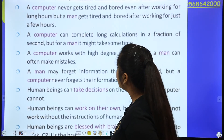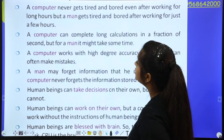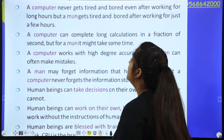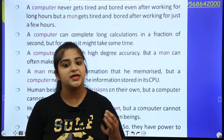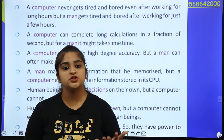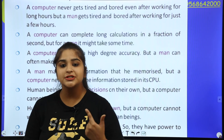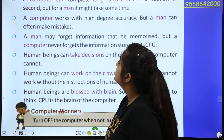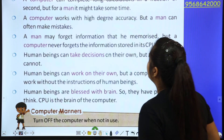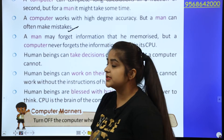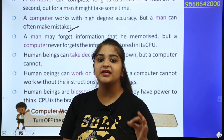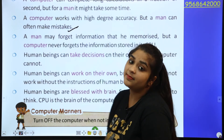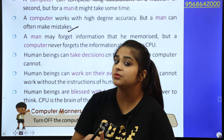A computer can complete long calculations in a fraction of a second, but for a human it might take time. A computer works with a high degree of accuracy, but a human can often make mistakes. A computer is always accurate — it is right. But humans are sometimes wrong with their work, because we are human and the computer is a machine.